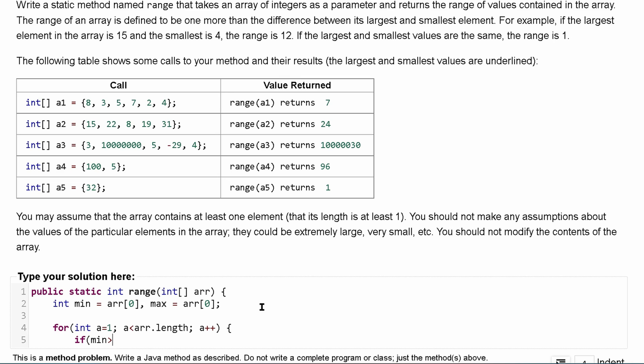If our current minimum is greater than the new element that we are looking at, we don't want that. We'll just set our minimum equal to the current array element.